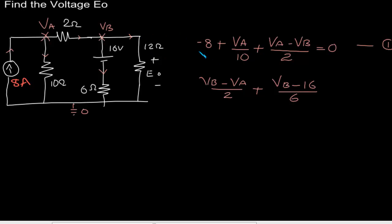The current in this direction will be Vb by 12 ohms. There is zero. This will be our second equation.